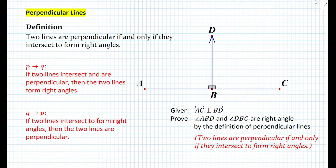Notice that here we're not trying to prove the definition — the if-and-only-if statement. We're proving each component individually to use them as theorems in proofs. If you don't want to use the definition but want to use the theorem, you can state: if two lines intersect and are perpendicular, then the two lines form right angles. That brings us to the second part — the converse, if Q then P: if two lines intersect to form right angles, then the two lines are perpendicular.